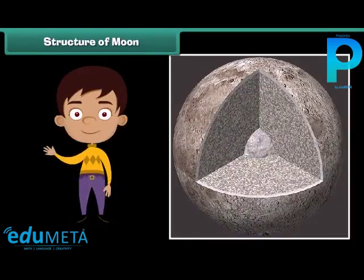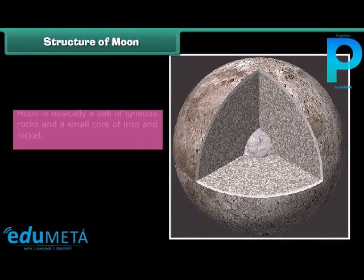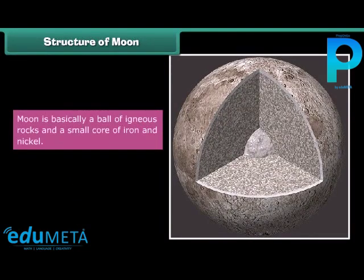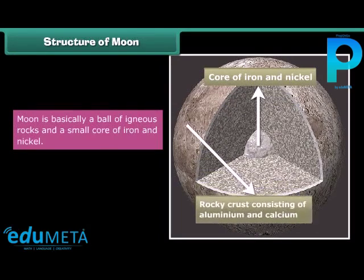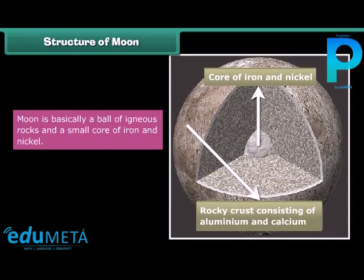Looking at the interior of the moon, the moon is basically a ball of igneous rocks with a small core of iron and nickel, and there is a rocky crust consisting of aluminum and calcium.